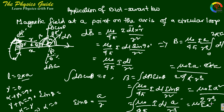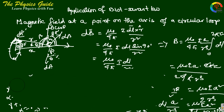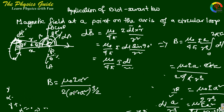Substituting R equals the square root of x squared plus A squared, we get R cubed equals (x squared plus A squared) to the power 3/2. Therefore, B equals mu naught I A squared divided by 2 times (x squared plus A squared) to the power 3/2, with direction along the axis.